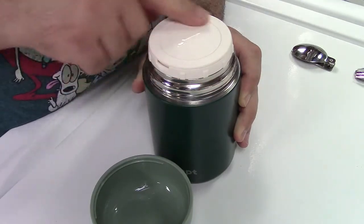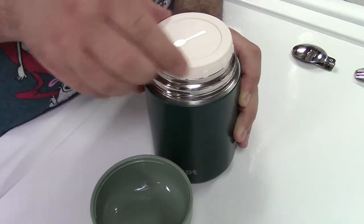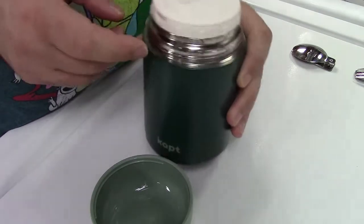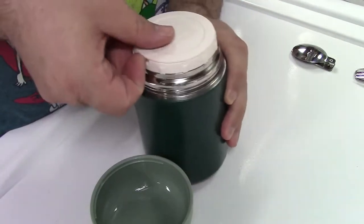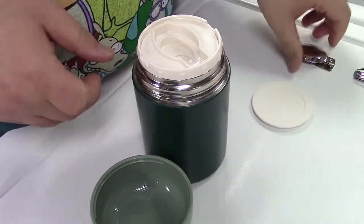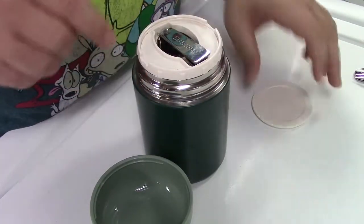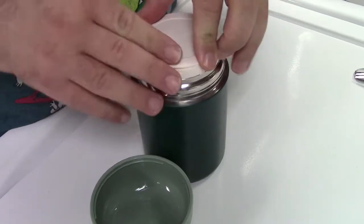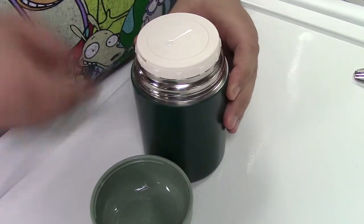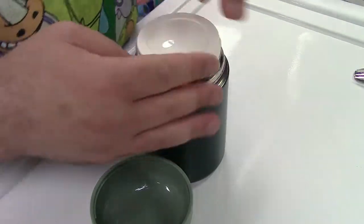And now you have the cap for the thermos itself. There's a picture of a spoon on there. I've already taken it out, but you can open that, and there is space to put the spoon in, just like that. And then the cover back on. So you can always have a spoon with you if you want.